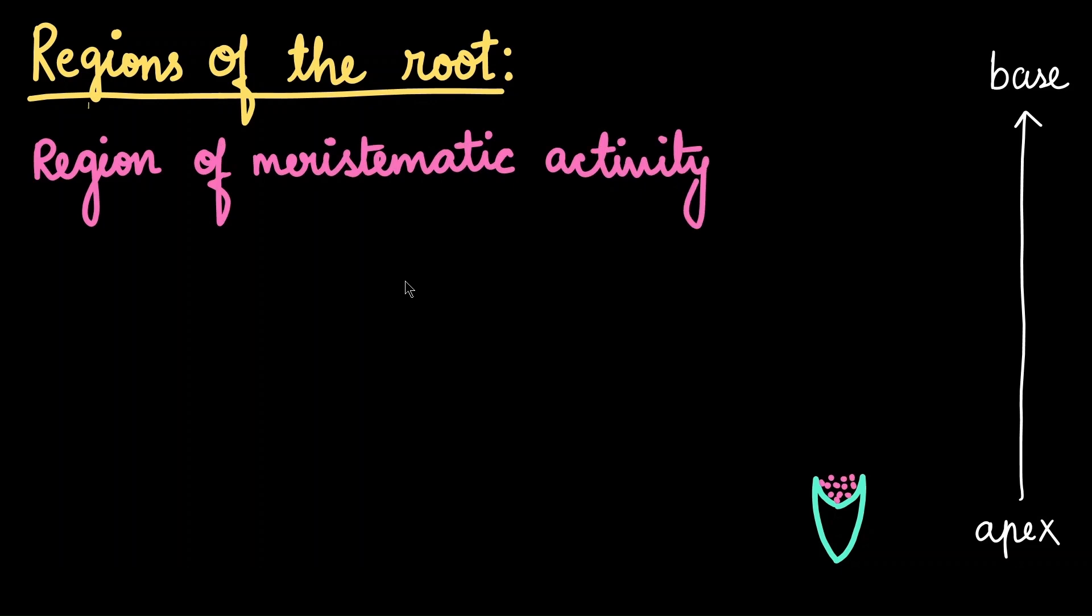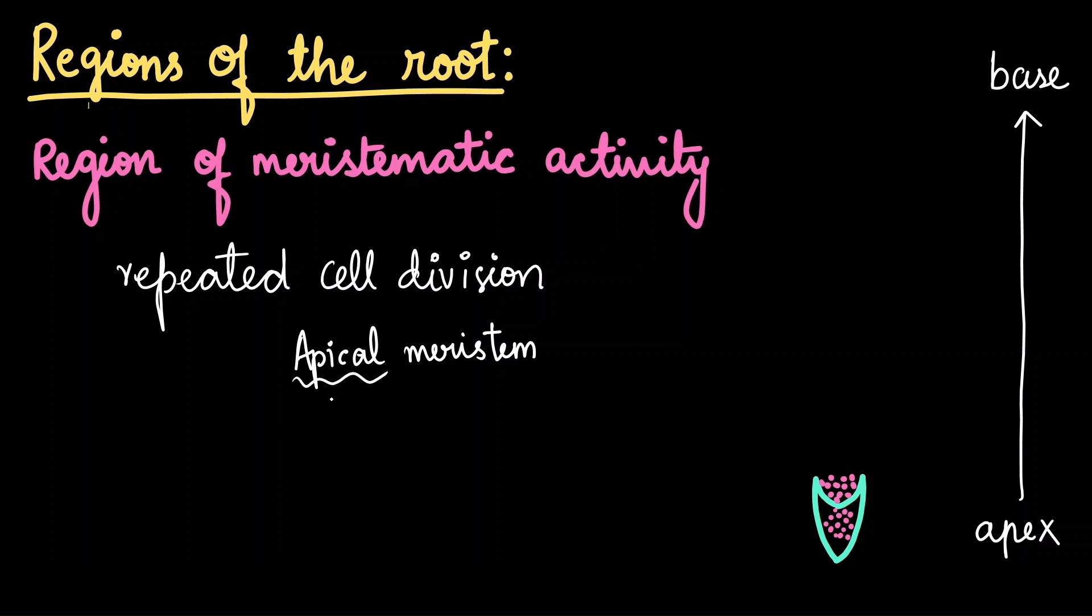The region of meristematic activity. So just behind and inside the root cap is the meristematic region. This is where all the new cells of the root are made. The cells here keep dividing rapidly, producing fresh cells that will eventually form different parts of the root. This area is also called the apical meristem.